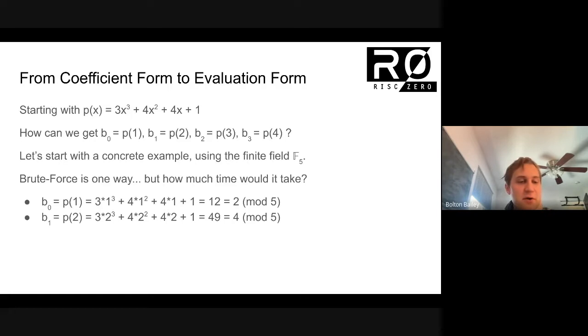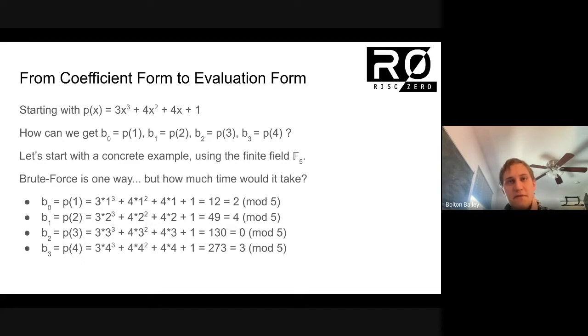And then we could do the same thing for evaluating it at 2. We can do 2³, 2², 2. We can multiply all of these numbers together. You can use a calculator to check my math if you want. This comes out to 49, which is equal to 4 mod 5. And we can do the same thing with 3, and it comes out to 0 mod 5. And we can do the same thing with 4, and it comes out to 3 mod 5.